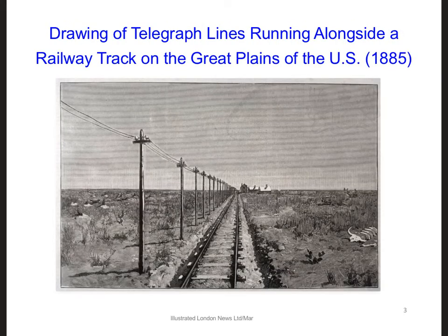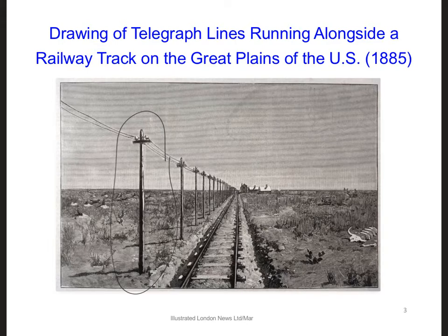But starting in the 1840s, the first electrical system started to be used: the telegraph system. In this case, long cables were installed between telegraph stations, usually supported by utility poles over the ground. Using Morse code, information was sent down these wires using pulses of electric current.